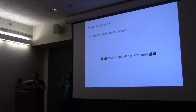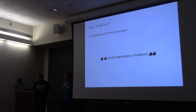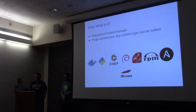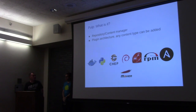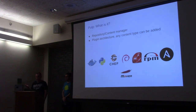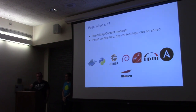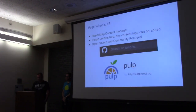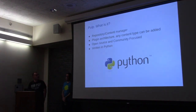So what is PULP? It's a repository and content management solution. It helps you avoid dependency problems. It has a plugin architecture, so it supports multiple content types — Docker, Python packages, Chef, RubyGems, et cetera. For every content type, you basically have a plugin in PULP, and anybody can contribute a plugin. We have several plugins maintained by community members. PULP is also open source, and we really focus on the community. It's written in Python — PULP 3 is in Python 3.